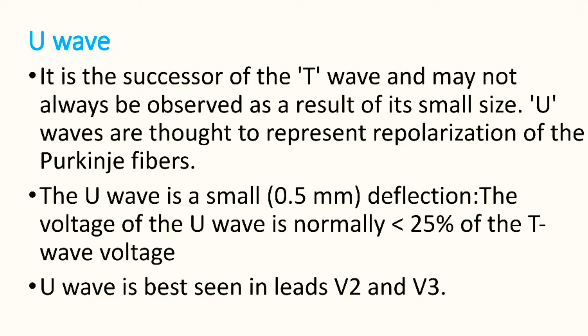You may not see a U-wave in every ECG — it is seen very rarely. U-wave is a very small deflection, maybe 0.5 mm in size. It is normally less than 25% of the T-wave voltage. U-waves are best seen in leads V2 and V3.